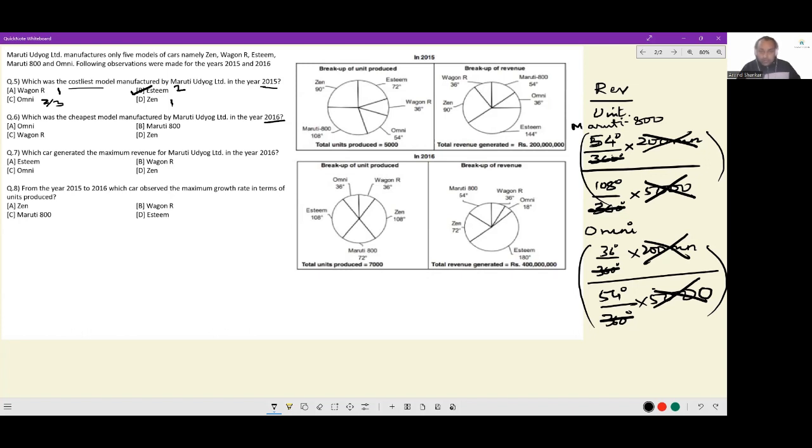Let's go. So for Omni, it is 18 divided by 36, so half. For Maruti 800, it is 54 divided by 72, so 3 by 4. For Wagener, it is 36 divided by 36, so 1. And for Zen, it is 72 divided by 108, so it is 2 by 3. Which of these is the cheapest model? Answer is option A, Omni. That is all the work that was needed to be done.